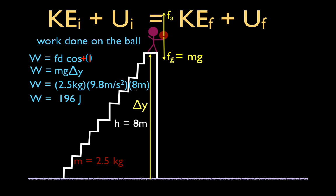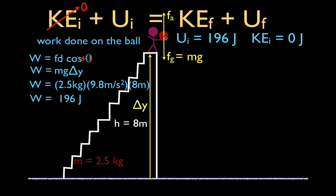Where did all that work go — all that energy expended carrying the ball up those stairs? It went into the potential energy of the ball. You gave the ball 196 joules of potential energy. Now, turning to conservation of mechanical energy: at its initial position at the top, the ball has 196 joules of potential energy. Since you're just holding it there — it's not moving — it has no velocity and therefore no kinetic energy. So the initial total mechanical energy is 196 joules.